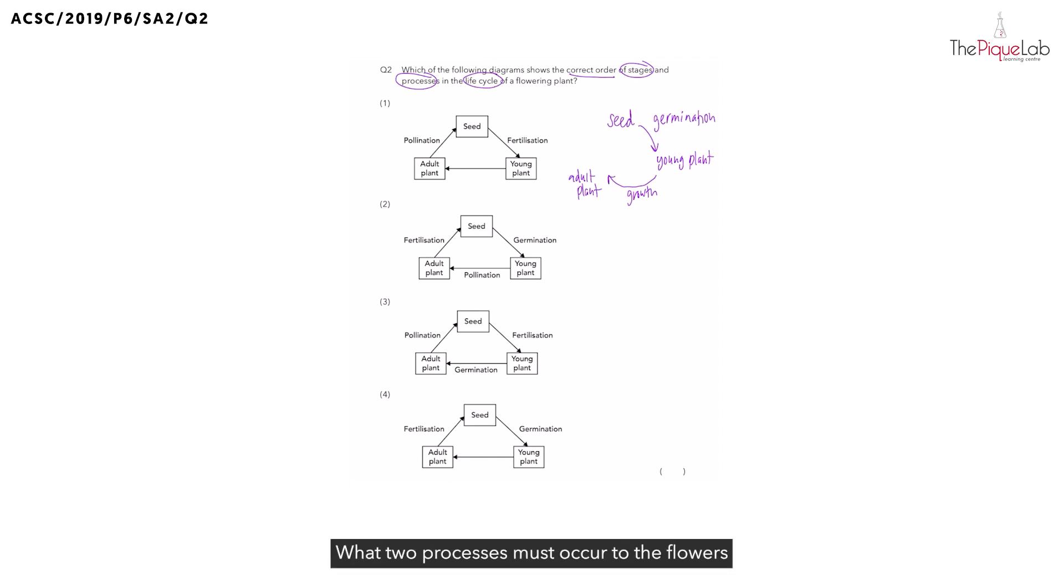What two processes must occur to the flowers for it to develop to become a fruit? The flowers must go through pollination and fertilization for it to develop to become a fruit. I'm going to use the symbol P for pollination and F for fertilization.